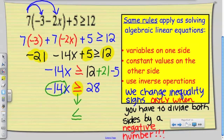Why am I dividing both sides by a negative number? Can someone tell me? Why am I doing that? What am I trying to solve for? x. So in order to isolate the x, I need to get rid of the negative 14. That requires dividing both sides by negative 14.